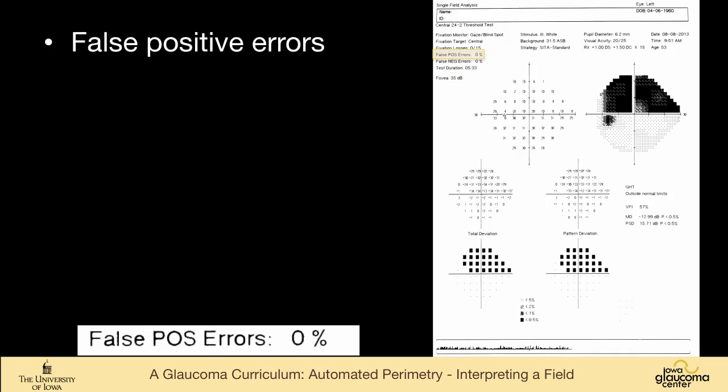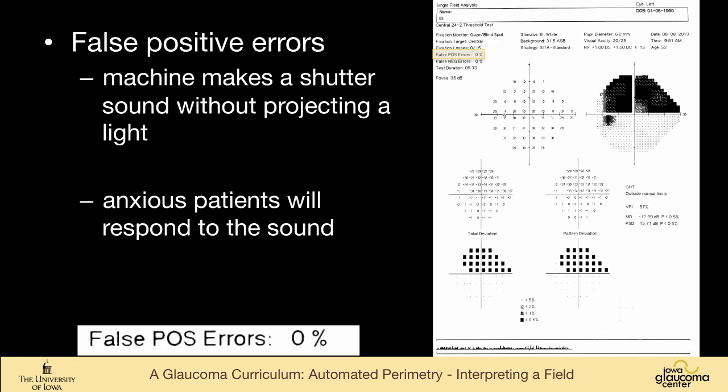False positive errors are a very important source of uninterpretable visual fields, and they are often, unfortunately, interpreted. And so hopefully we will get you to the point where you won't accidentally interpret a false positive field as being pathology.